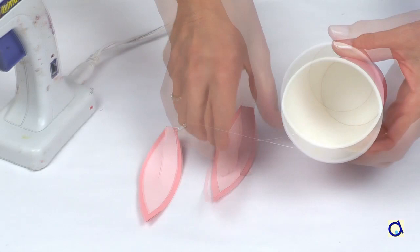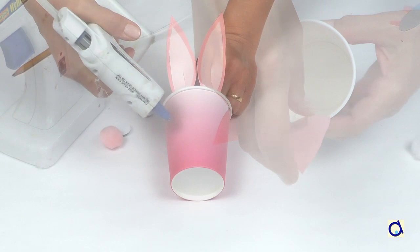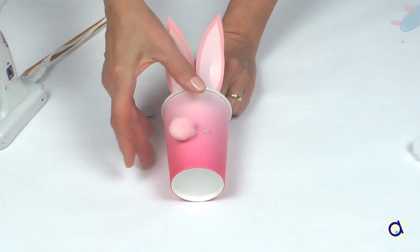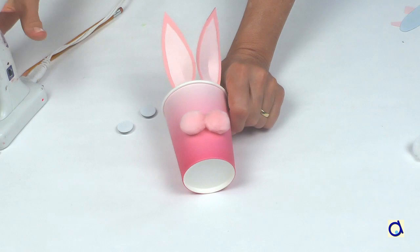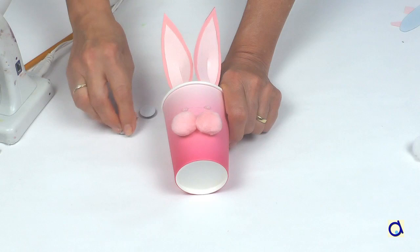Put two dots of hot glue at the top inside the cup and glue the ears in place. Put two dots of hot glue around the middle of the cup, aligned with the ears and glue two matching pom-poms on them. The two pom-poms will represent the snout of the bunny.